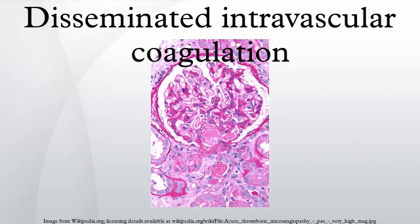This leads to compromise of tissue blood flow and can ultimately lead to multiple organ damage. In addition, as the coagulation process consumes clotting factors and platelets, normal clotting is disrupted and severe bleeding can occur from various sites. DIC does not occur by itself but only as a complicating factor from another underlying condition, usually in those with a critical illness.